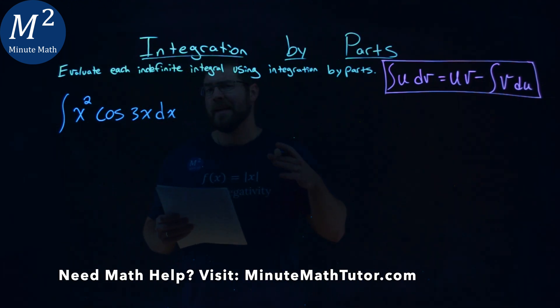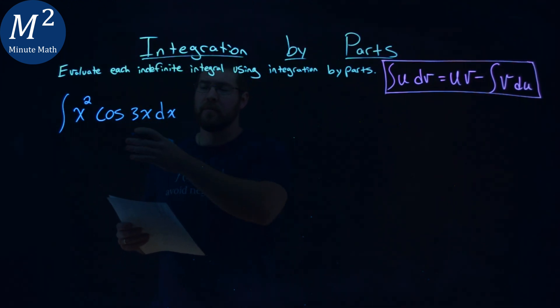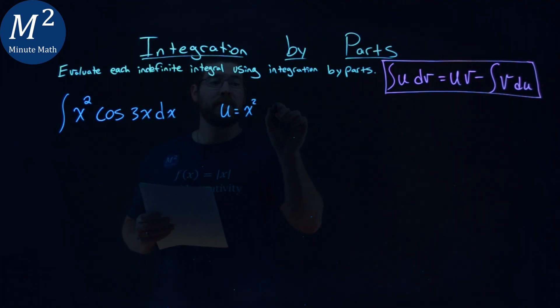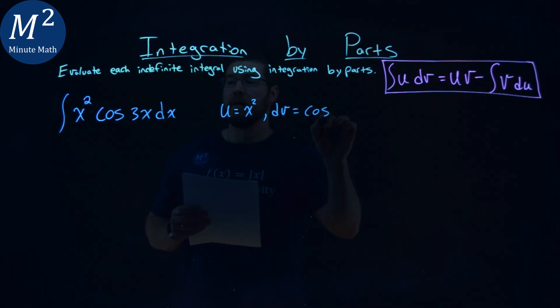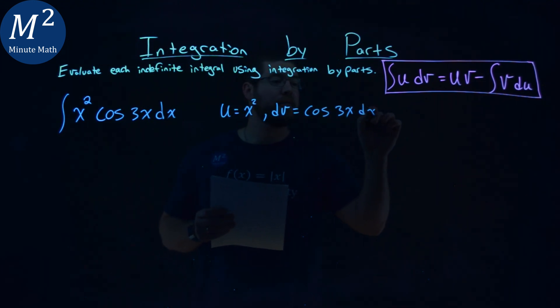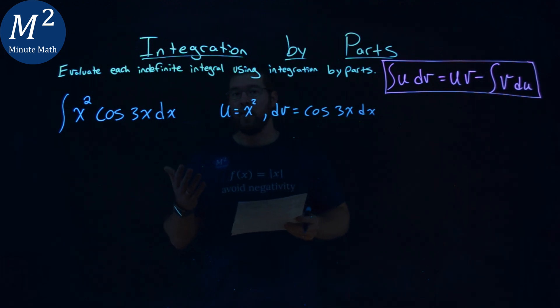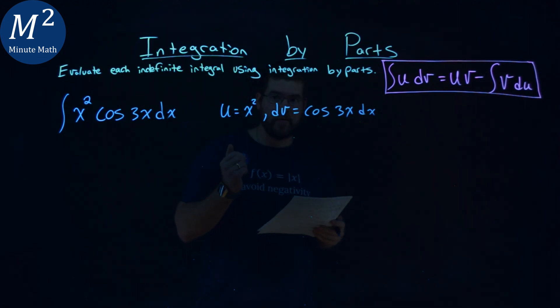We first want to find a u and a dv value. Given this problem, I'm going to set my u value to be x squared, and my dv value to be cosine of 3x dx. With that, we need to find a du and a v value.